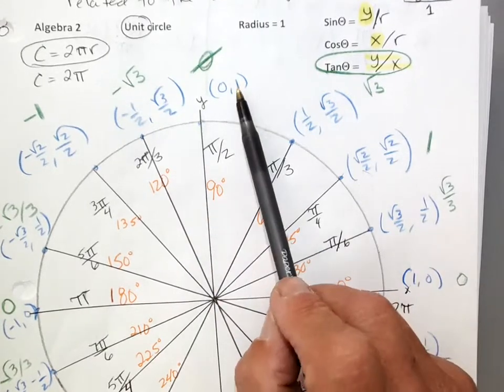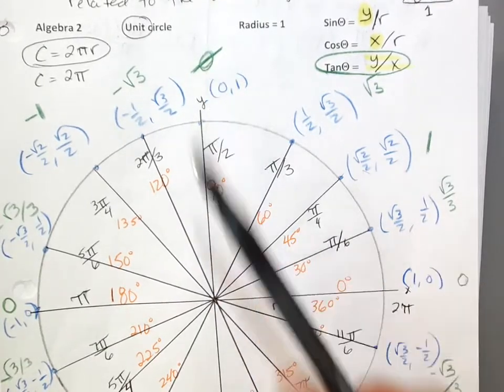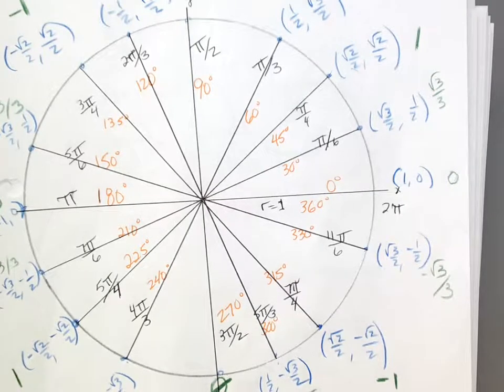At 90 degrees, tangent is 1 over 0 — undefined. At 270 degrees, it's y over 0 — also undefined. So tangent is undefined at 90 and 270.